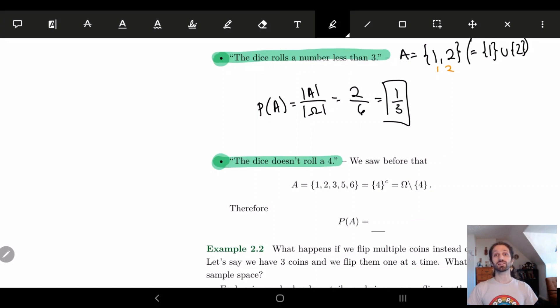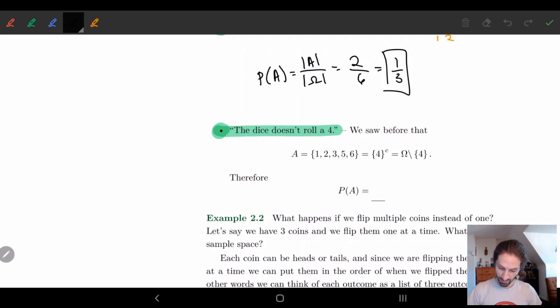And here we're going to ask that the dice doesn't roll a four. So here we saw this in our previous examples, right? We saw that A has to be the entire set except for four. And we said we can represent this in multiple ways. We can look at it as a complement, as a difference, et cetera. So in this case, let's see how many elements we have. We have one, two, three, four, five, we want the order of A divided by the order of omega. And so we have five over six, and that's it.